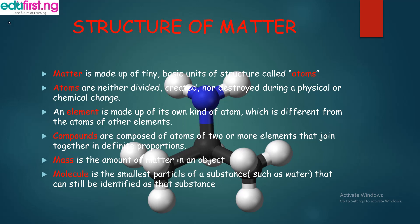So, what is a compound? Compounds are composed of atoms of two or more elements joined together in definite proportions — that is when we have a compound. Mass is the amount of matter in an object. The molecule is the smallest particle of a substance, such as water, that can still be identified as that substance.